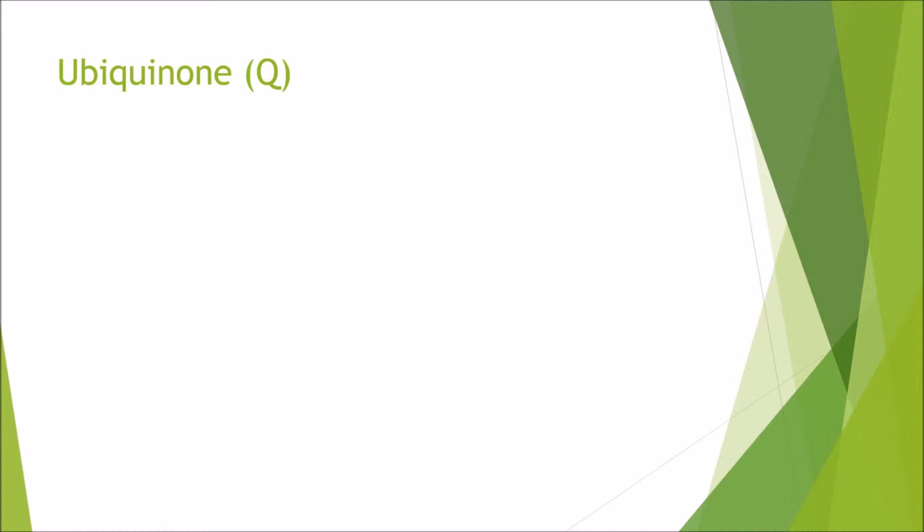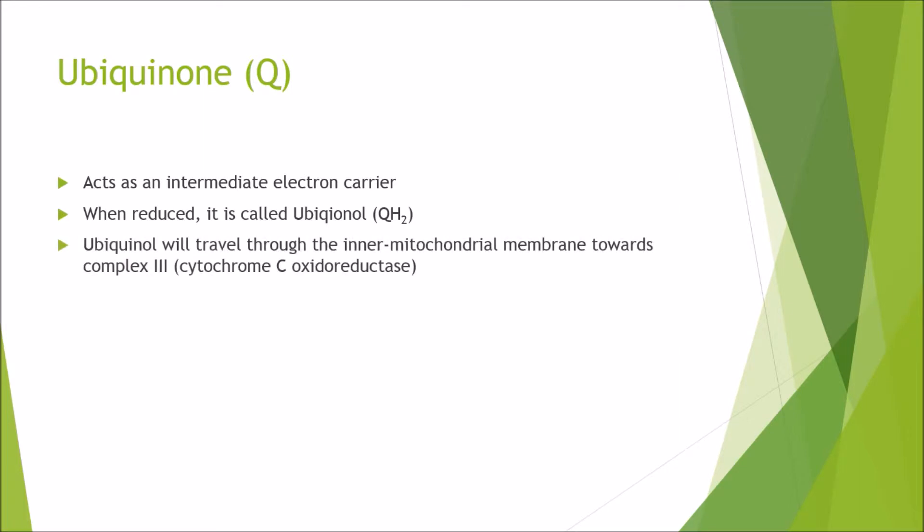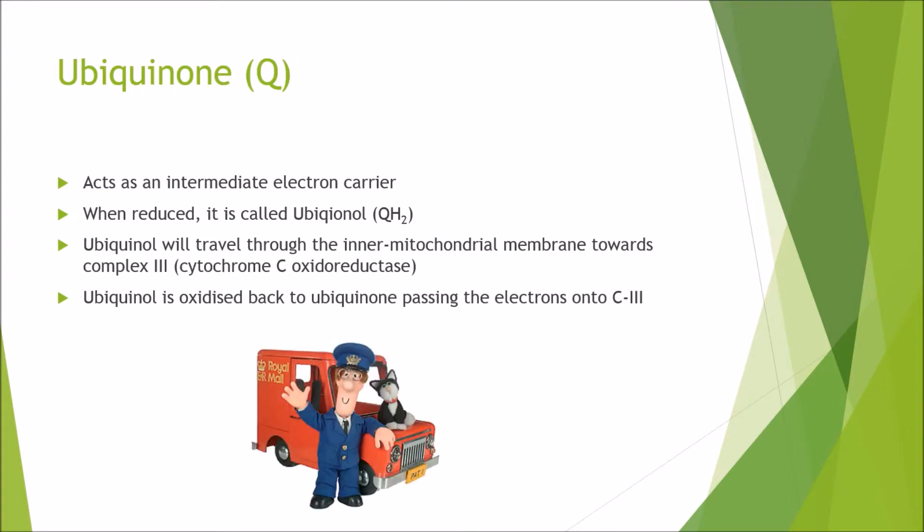Now we're going to talk about ubiquinone. This acts as an intermediate electron carrier, but when it's reduced it's called ubiquinol, or QH2. Ubiquinol will travel through the inner mitochondrial membrane towards complex 3, so it's going to completely skip complex 2, which we'll talk about later. Ubiquinol is then oxidized back into ubiquinone, passing the electrons onto complex 3. You can think of it literally as a postman, so it takes the electrons or the letters from one place, and it's literally going off and delivering it to the next place.